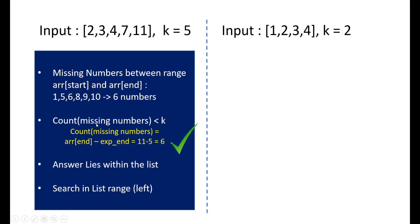In the first example, we can say that the missing numbers are in range of these numbers itself. We can find this by counting the missing numbers using the formula: actual end minus expected end. Here the last element is 11, while the actual last element should have been 5 because the array is of length 5. If we subtract the expected end from our actual end, we get 6, which tells us that there are 6 numbers in this range which are missing. Since our k equals 5, which is less than this count, we can say we will find the number within this range.